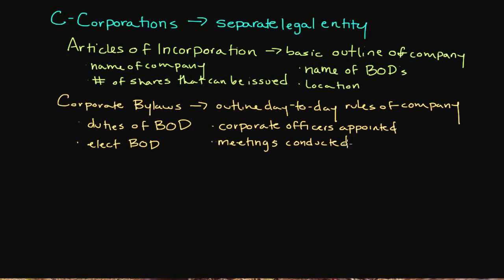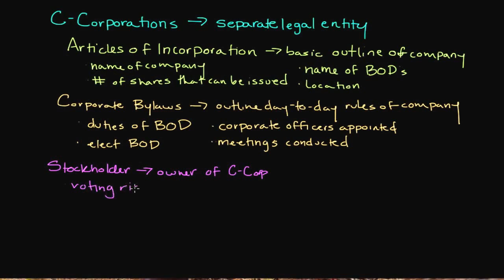Now that we know how C-corporations are created, we need to identify a few people that are actively involved. The first is what we refer to as the stockholder. The stockholder is technically the owner of a C-corp. Stockholders purchase actual shares of ownership, usually for a certain dollar amount. For publicly traded companies, you can purchase shares on an open market. So you put forth, let's say, $50 and you receive one share, which is a fraction of ownership of the entire corporation — and that entitles you to certain rights, the biggest being voting rights, specifically to vote on the board of directors.